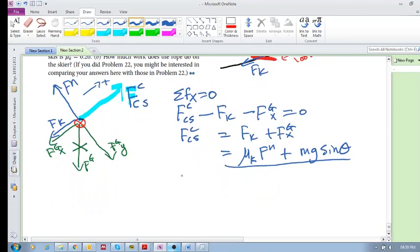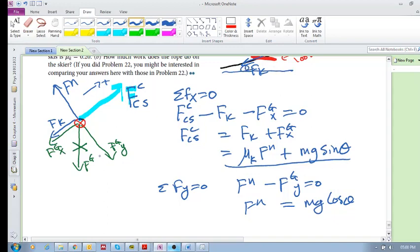Sum of the forces in the y is equal to zero. It's not accelerating in the y direction, so we've got normal force minus f_g_y is zero. So the normal force is equal to, and we know this is equal to mg cos theta. So it's mg cos of theta, and that's our theta right there.